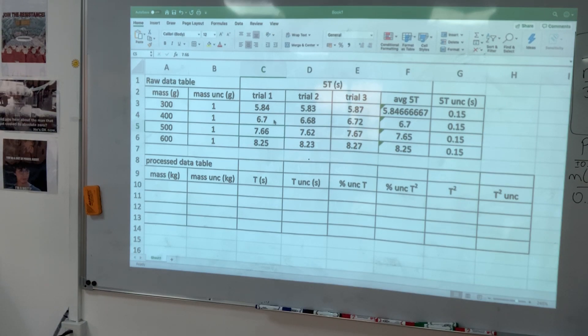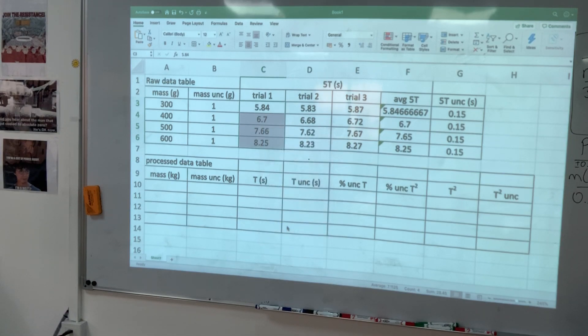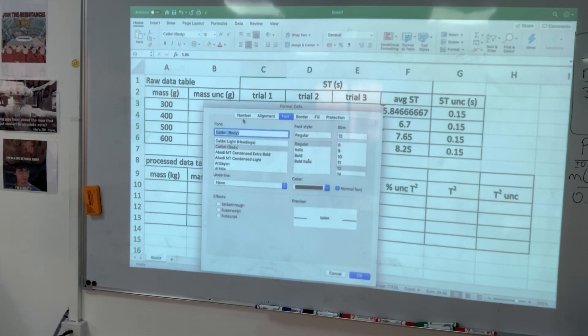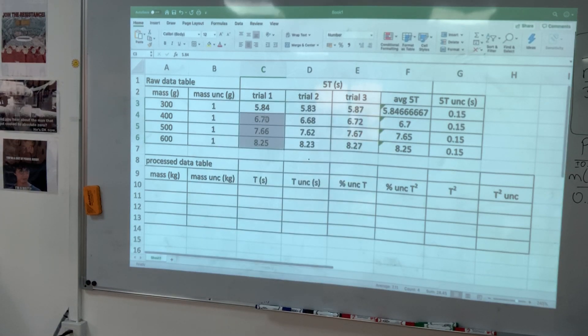But for lab reports, I need to have the same precision that means something for us. So we're going to select all of these values, right click, format, number, number, decimal places, two. When I hit OK, all of the values will have two decimal places.